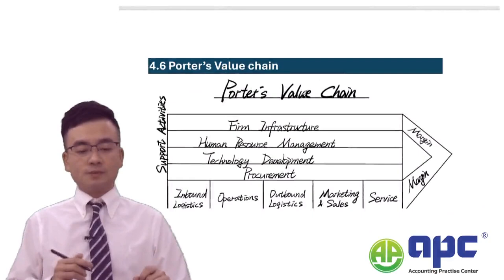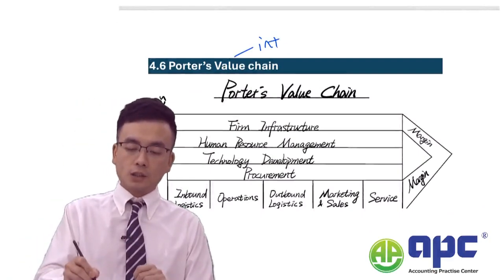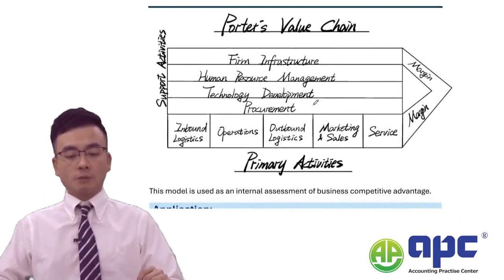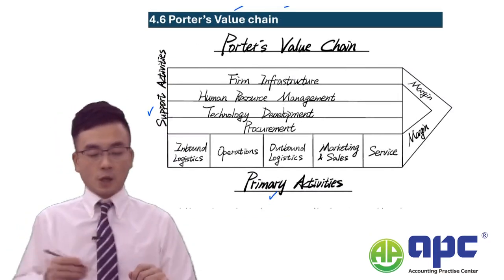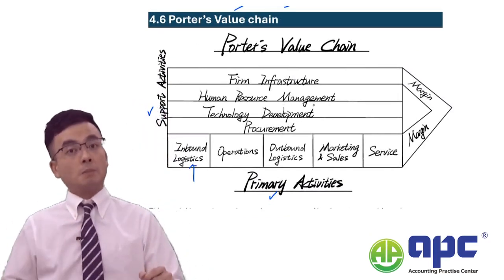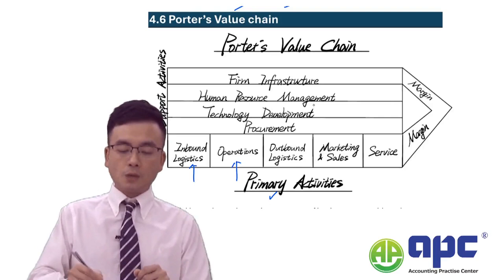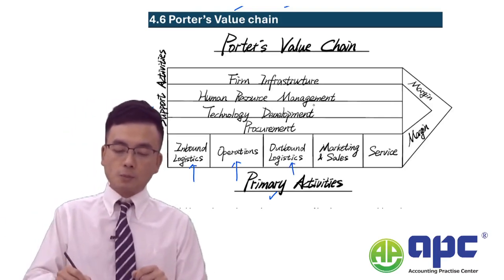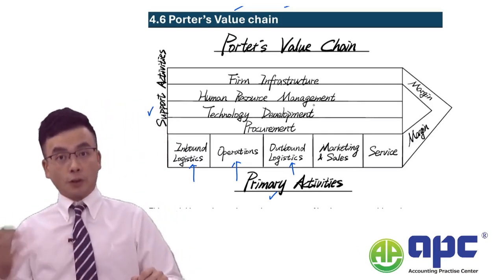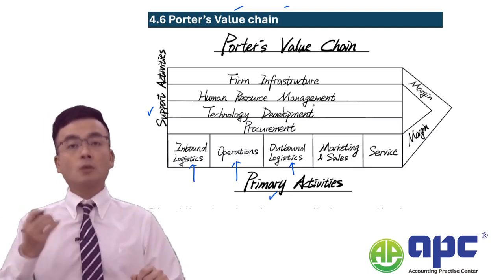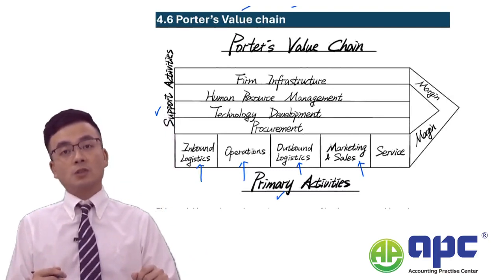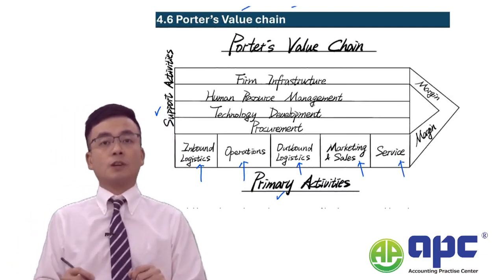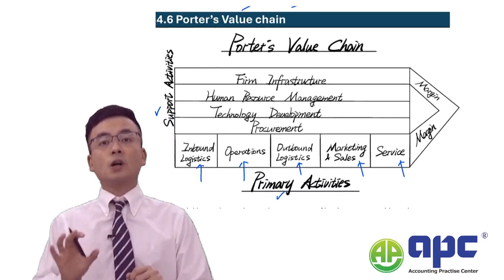I've also done the Porter's value chain to analyse the internal perspective of the Safeway company, from primary and support activities. For example: how we store data — inbound logistics; how we process it — operations; how we turn that into output such as reports or services — outbound logistics; and how we market, sell, and provide after-sales services. These five are the primary activities.